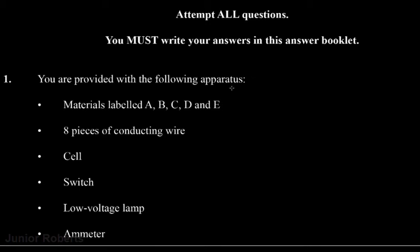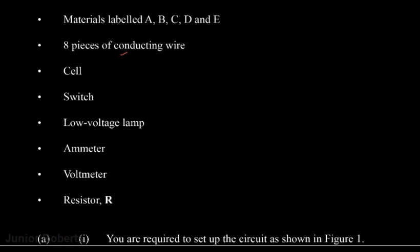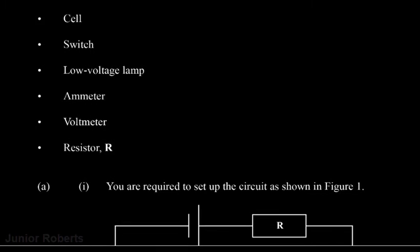So question one says you are provided with the following apparatus — materials labeled A, B, C, D, and E — and also eight conductive pieces of wire, a cell, a switch, a low voltage lamp, an ammeter, a voltmeter, and a resistor R.